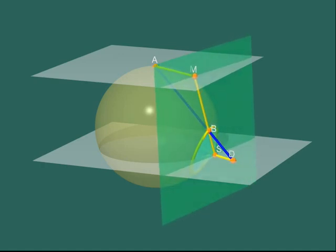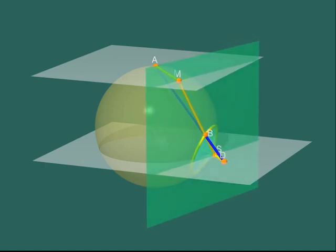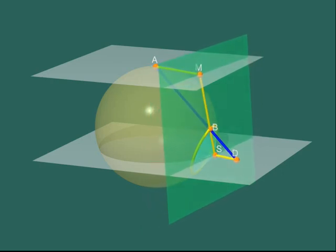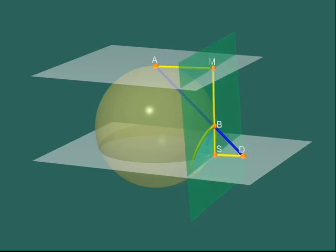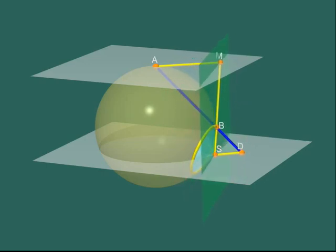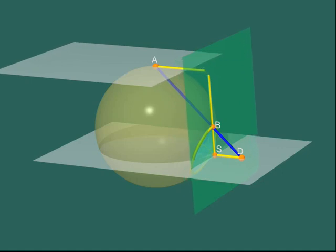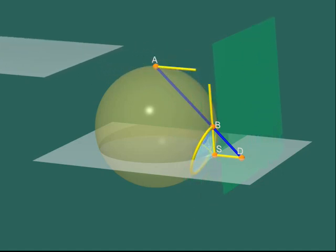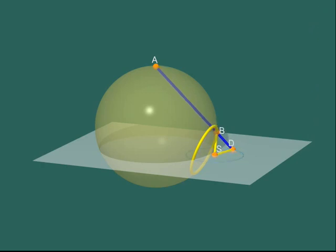When B moves along the yellow circle, the segment BS keeps tangent to the sphere. Its length is therefore constant. Since BS and DS have the same length, the moving segment DS also retains a constant length. Let's see. Saying that DS has a constant length means precisely that D describes a circle with centre S.